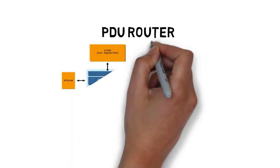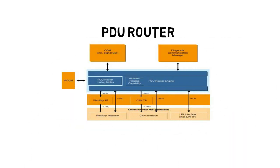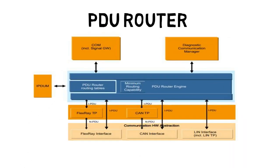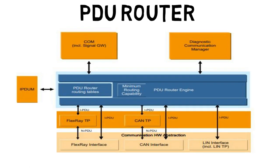In this section we will talk about the PDU router. Once the signals come out of the COM module, they will be pushed to the protocol data unit router. When it comes out of the RTE it is called signals, and when it comes out of the COM module it is called a protocol data unit. The major responsibility of the PDU router is to route the PDU to the specific bus.